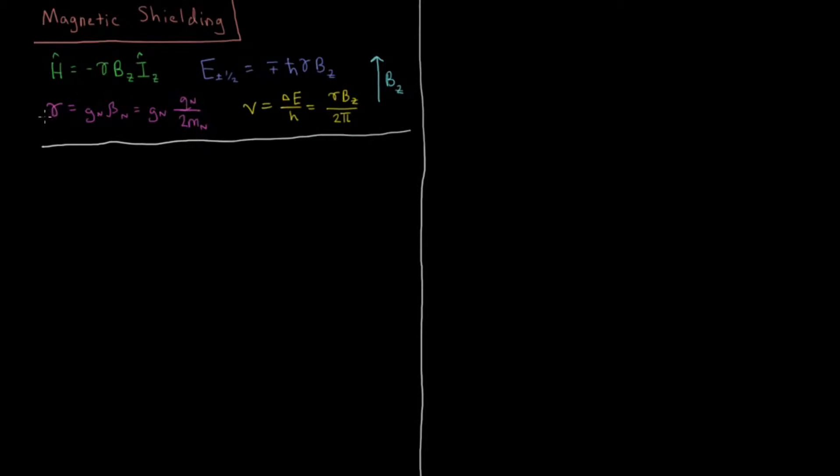This value gamma here is equal to a constant called the nuclear factor which depends on the nucleus, times the nuclear magneton which is a value which depends on the charge of the nucleus and is divided by two times its mass. So it's the mass charge ratio of the nucleus divided by two.